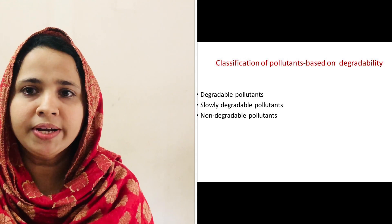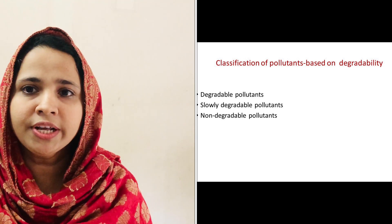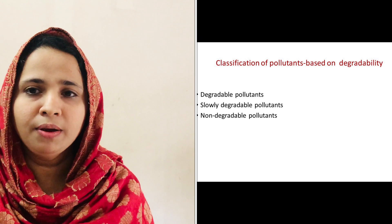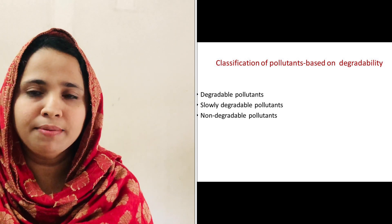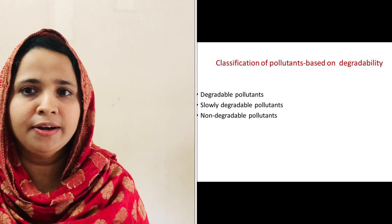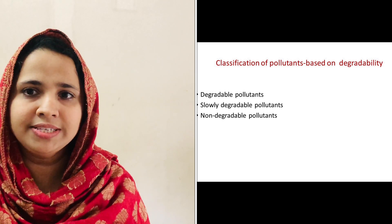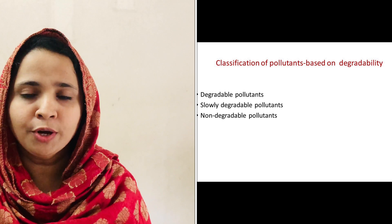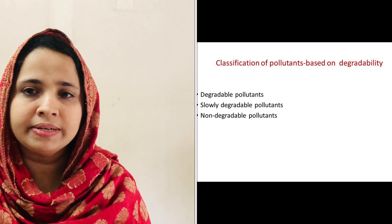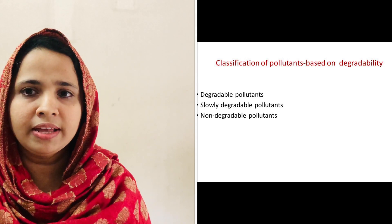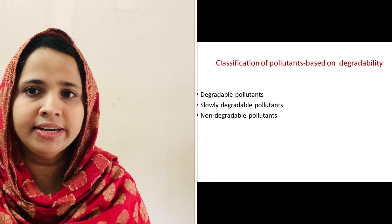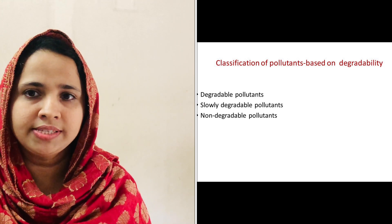Another classification of pollutant is based on degradability. They are classified into three types: degradable pollutants, non-degradable pollutants and slowly degradable pollutants. Firstly, degradable pollutants, or non-persistent pollutants — these are easily degraded by natural processes. For example, discarded vegetables, domestic sewage, etc. Secondly, slowly degradable or persistent pollutants — these remain in the atmosphere for many decades. For example, pesticides like DDT, plastics, nuclear waste, etc.